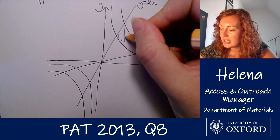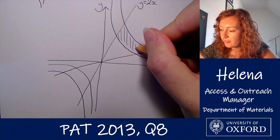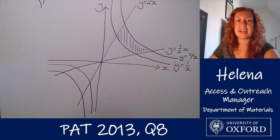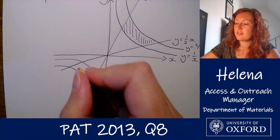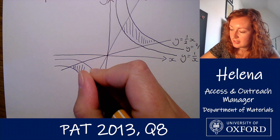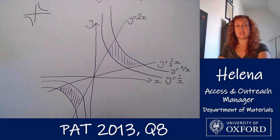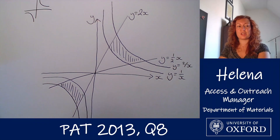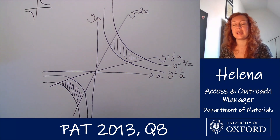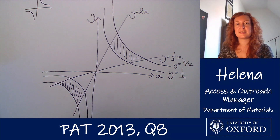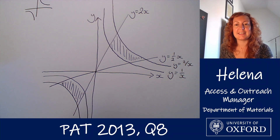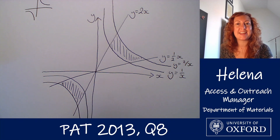The regions we're being asked for are the regions bound by both inequalities — the areas enclosed by all four lines. There is one region in the first quadrant and another in the third quadrant. Those are the two regions on the graph that we need to show. I hope that was useful — please join us again for another PAT problems video next week.